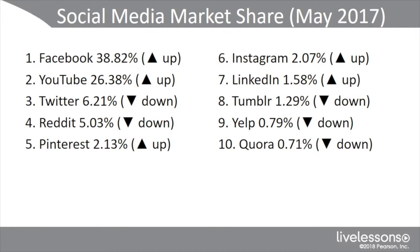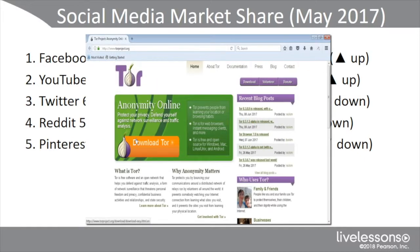As a security practitioner dealing with layer five through seven security, content security, acceptable use policies, and URL filtering, you need to be aware of these media sites and emerging sites that come up — maybe not on the top 10 list, but investigate new and emerging social media sites. It also wouldn't hurt to get a Tor browser and start doing some investigation on the dark web and deep web and some of the popular sites there as well.